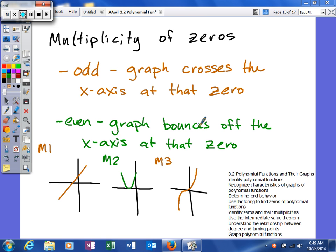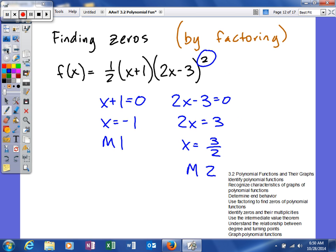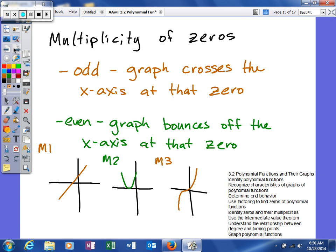Now we're going to talk about multiplicities of zeros. We looked at, in the last example, how to find multiplicities. Now we're going to talk about what they mean.